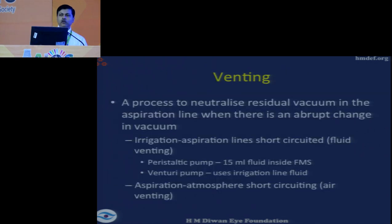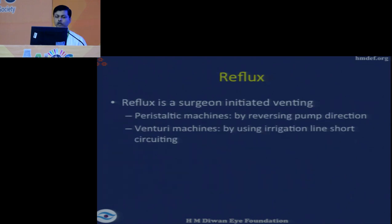Venting is a process which allows you to neutralize residual vacuum. If you have caught something like the iris or posterior capsule unintentionally and suddenly release your foot switch, there is some reverse flow and the structure is forced away from the tube. Reflux, on the other hand, is a surgeon-initiated venting. Venting is automatic — a sudden release of the foot switch causes venting. If you have already caught something and want to release it gradually, you perform a reflux.